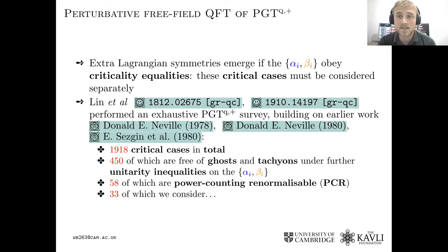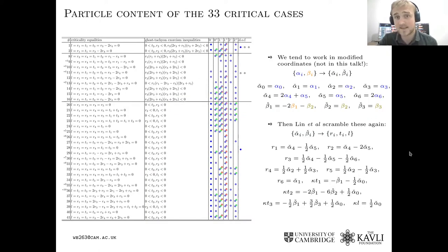So recently, an exhaustive survey was performed of all the critical cases in PGT. There are nearly 2,000 of those. In 450 of these cases, you can also get rid of ghosts and tachyons with further constraints on the couplings. And you can also ask that these theories be power counting renormalizable. So we take 33 of the best of these cases, and we've listed them in this table.